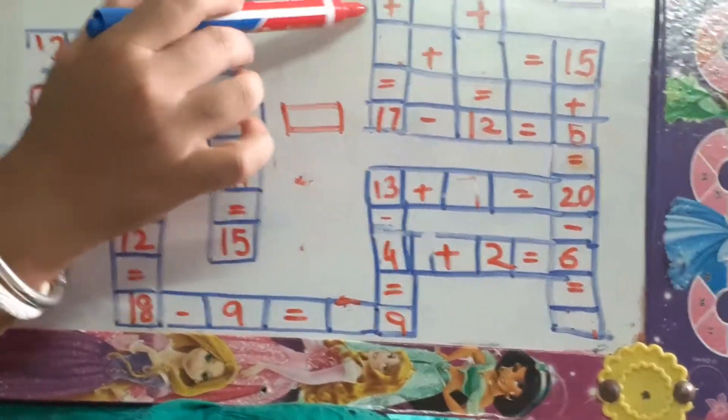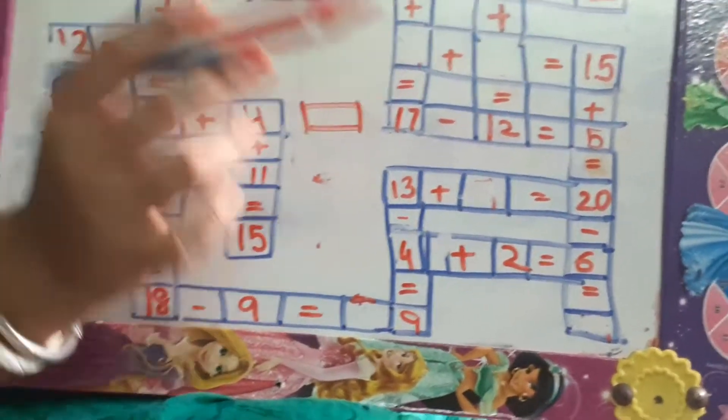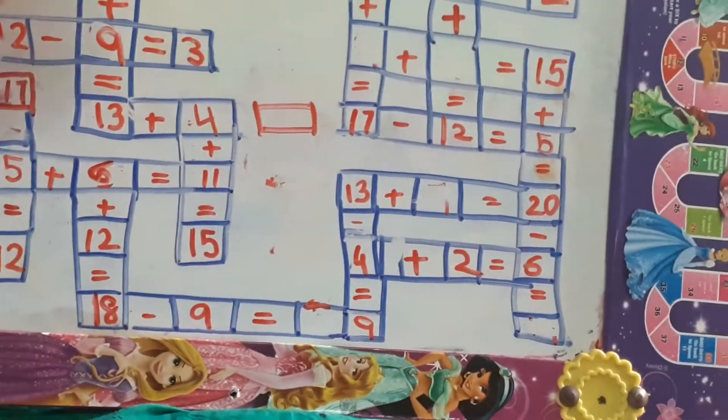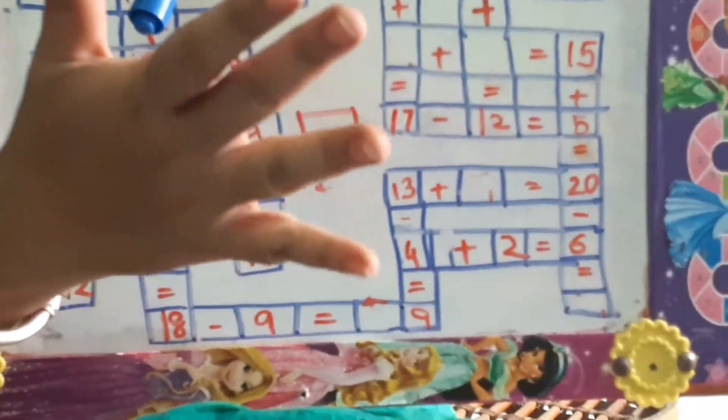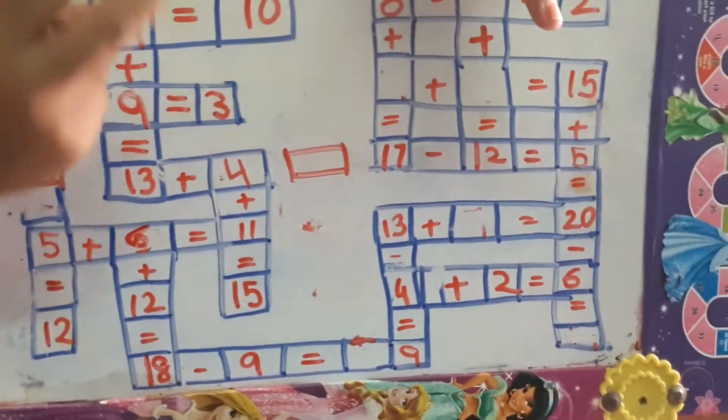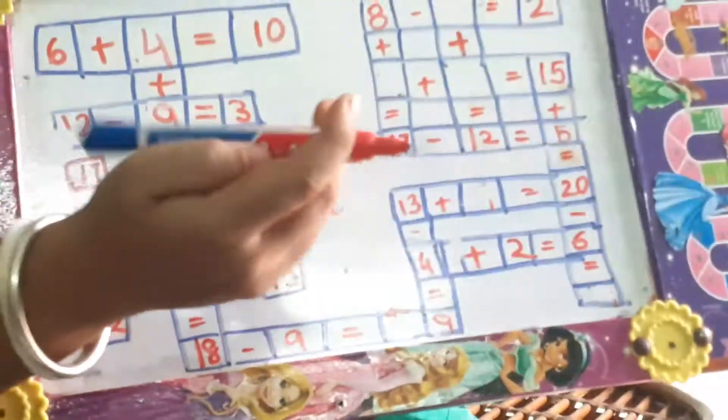See, now come to the second grid. 8 plus dash is equal to 17. 8 after, count children, 9, 10, 11, 12, 13, 14, 15, 16, 17. 9 fingers.